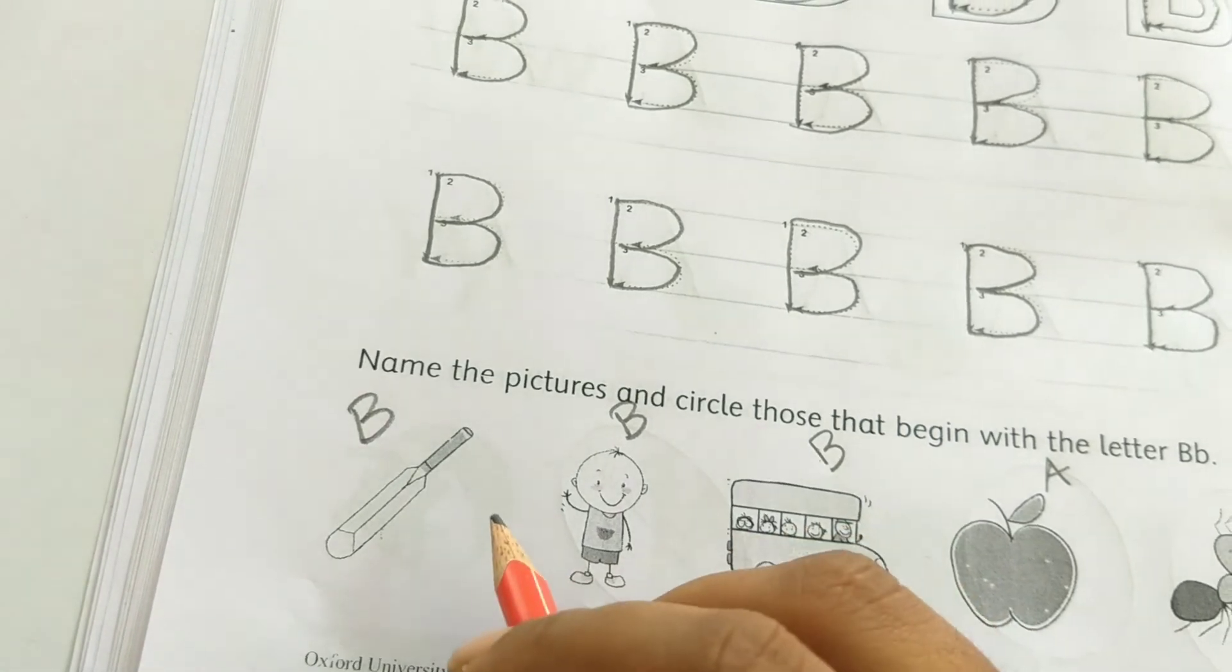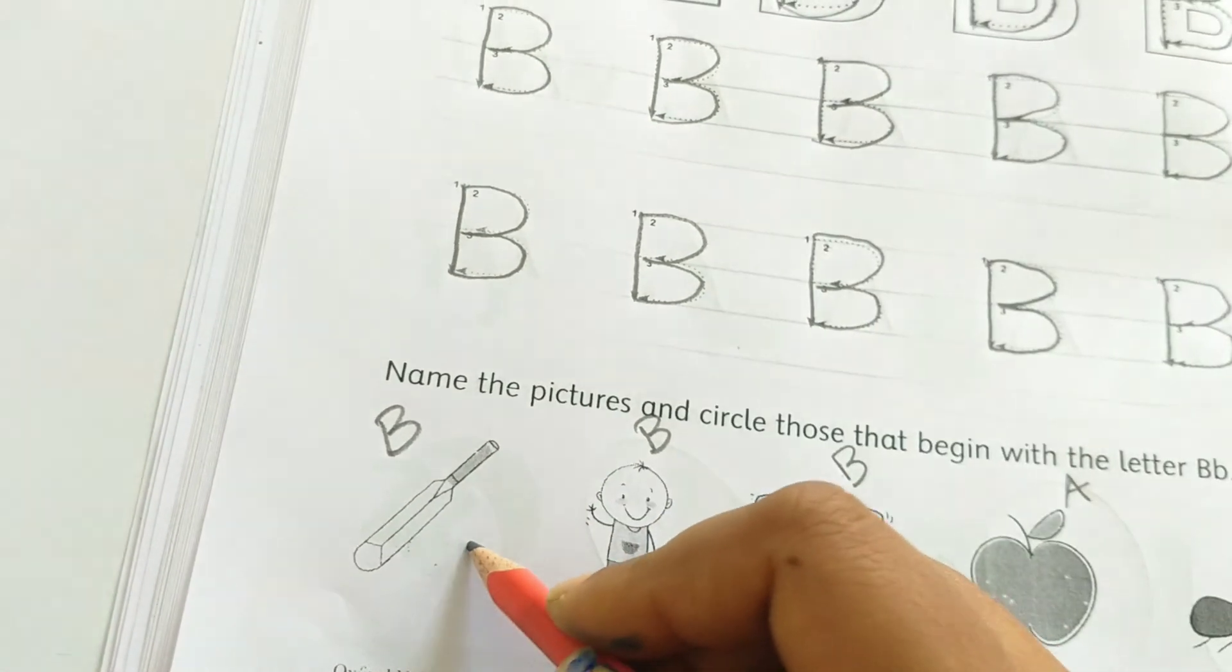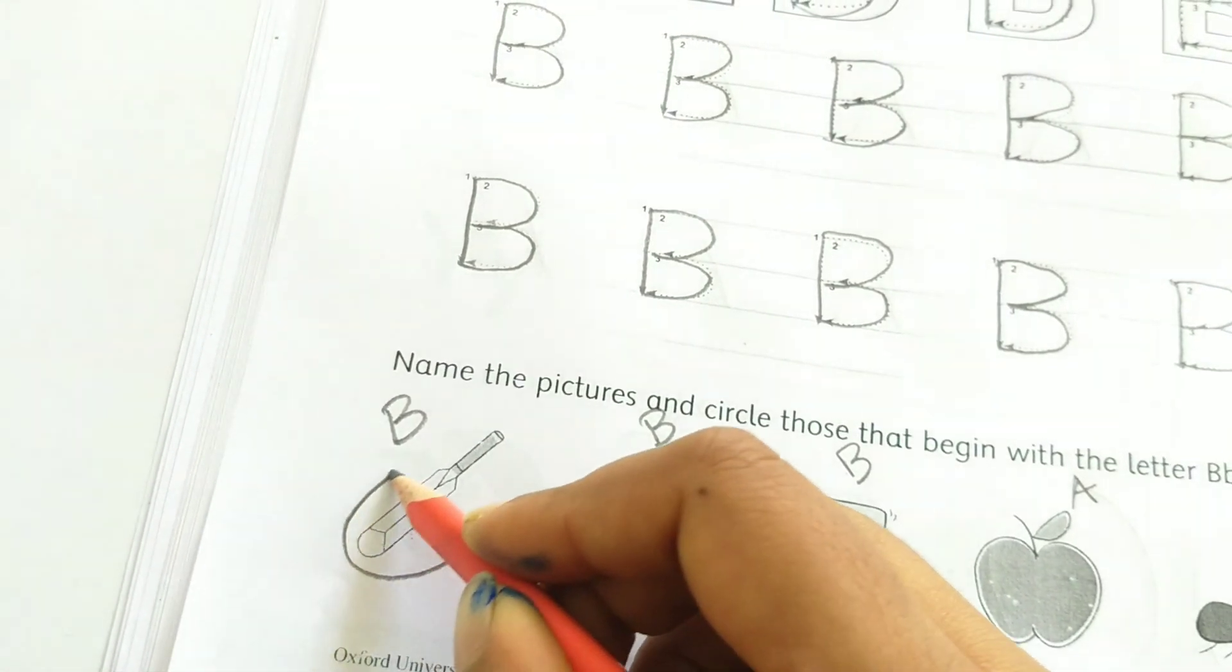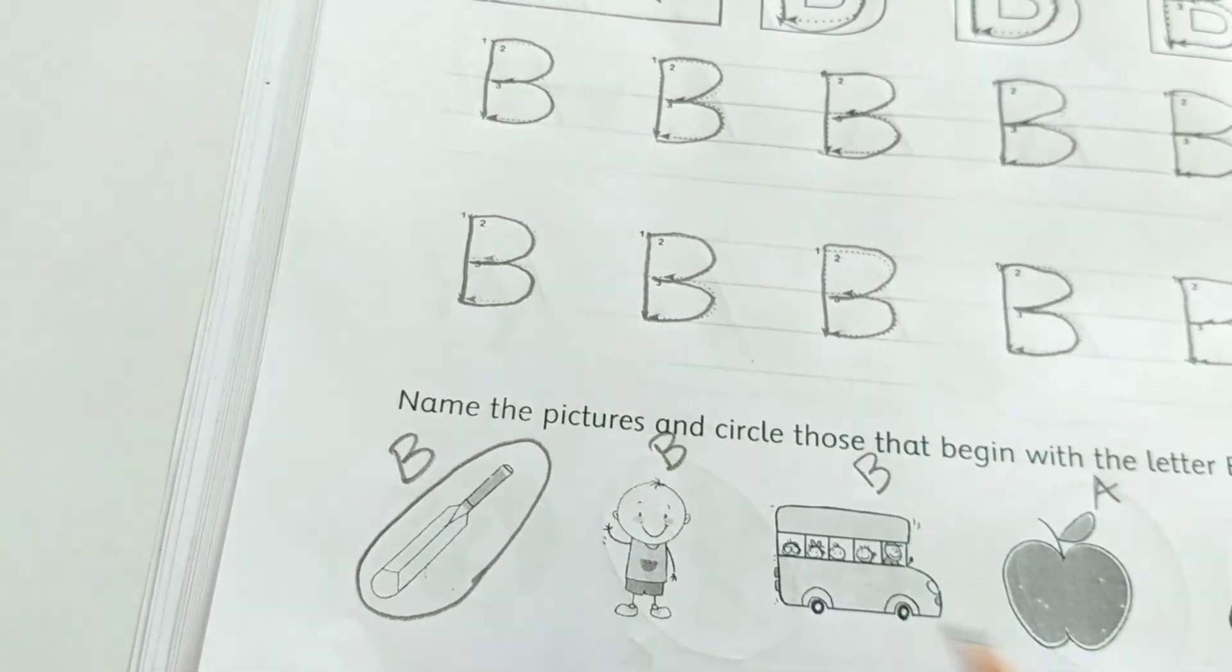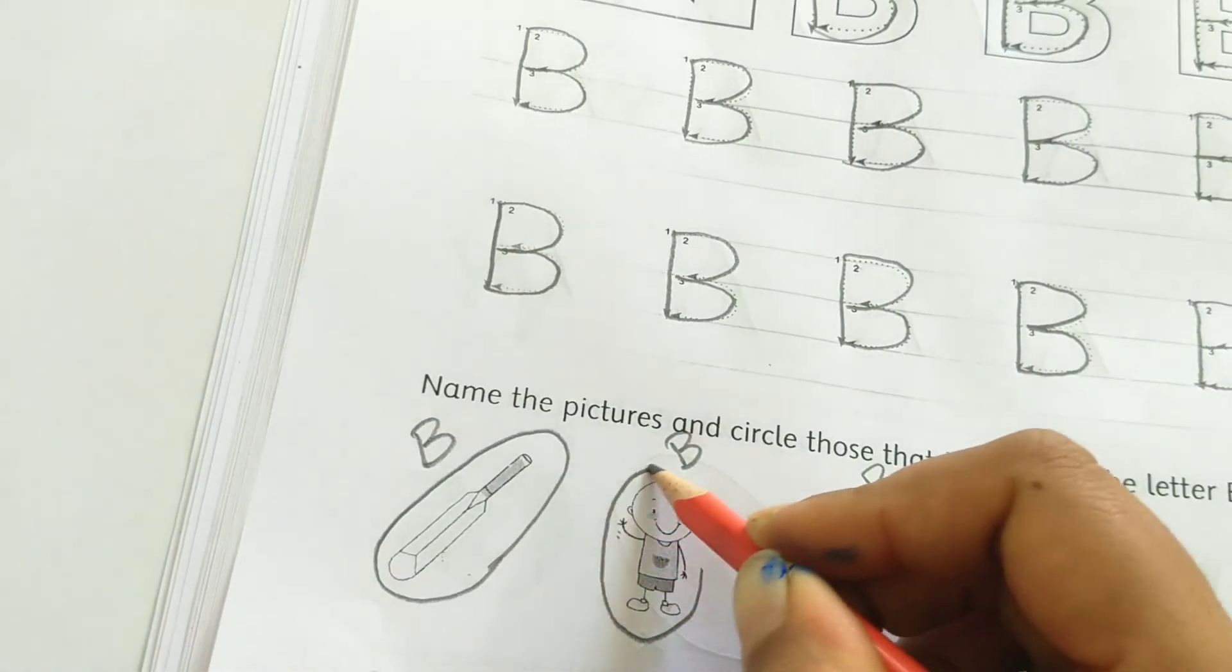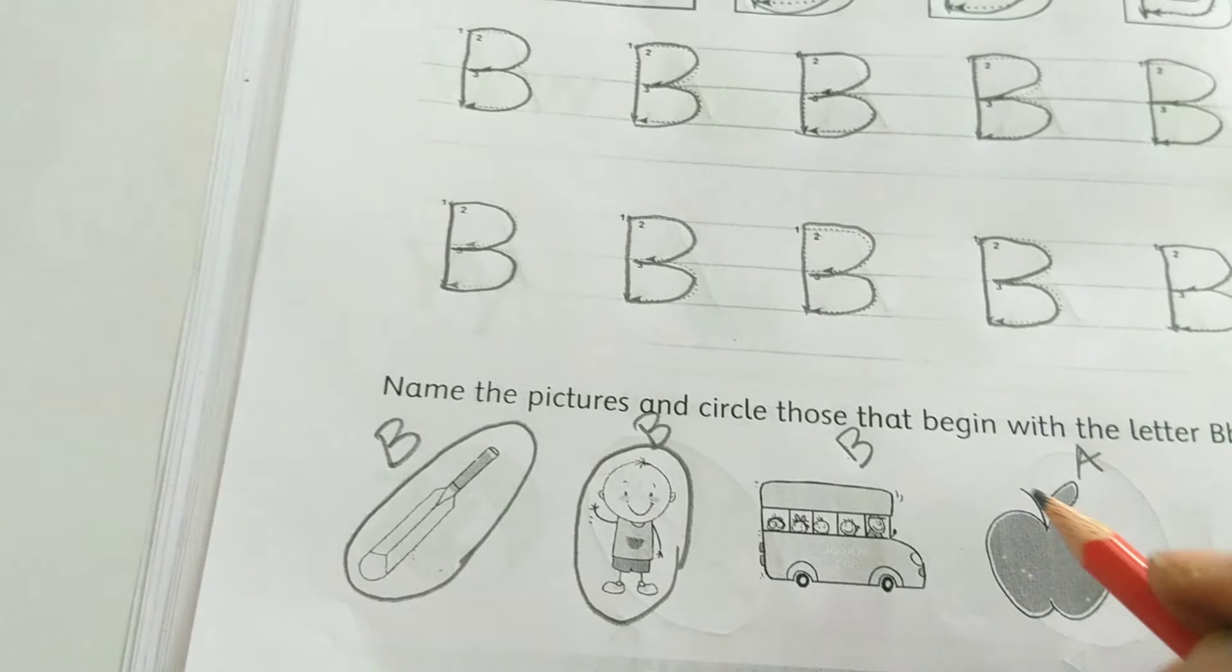Now circle those that begin with the letter B. Bat begins with the letter B, boy begins with the letter B, and bus.